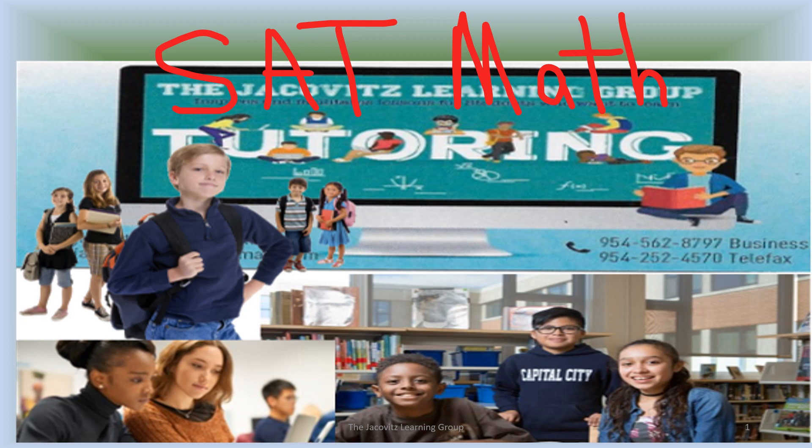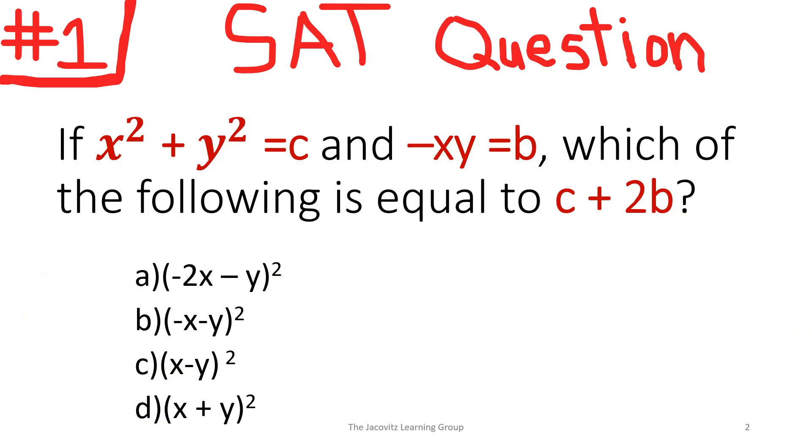So here we go. This is a quick SAT problem taken from an SAT back in 2019, and it was a real one. So here's the question. This wasn't the real number. It wasn't the first math SAT question, but this is what happens. If x squared plus y squared equals c and negative xy equals b, which of the following is equal to c plus 2b?